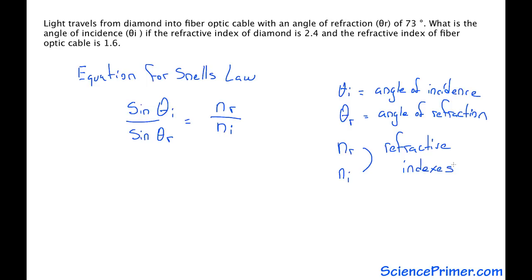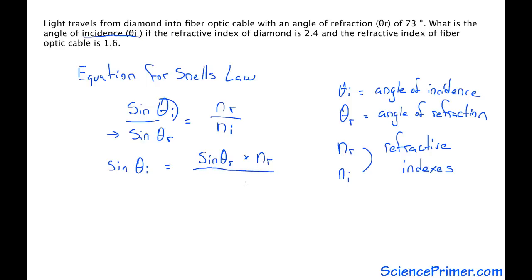Now, we find which of the variables in this equation we are trying to solve. In this case, it is the angle of incidence. So we need to take Snell's law equation and solve it for the angle of incidence. The first step is to move the sine of the angle of refraction to the other side — if we multiply both sides by sine theta r, we end up with sine theta r times the refractive index of the refracted medium over the refractive index of the incident medium equals sine theta i.